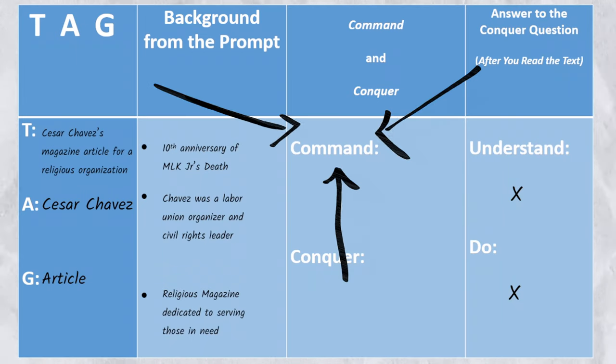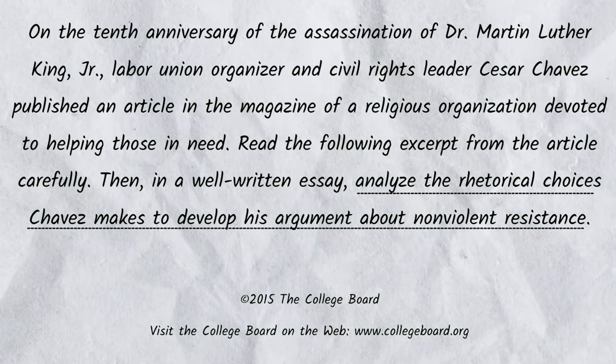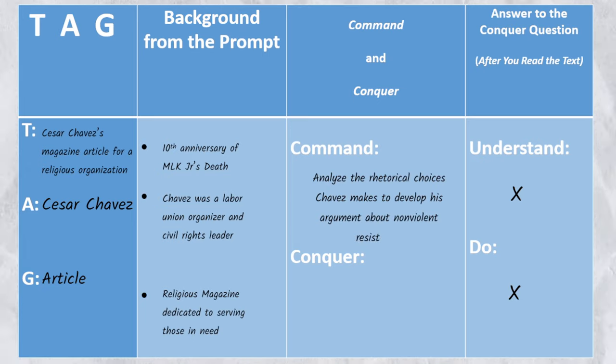Step three is identifying what I call the command element of the prompt. All we need to do is identify what we are actually commanded to do in the essay. We are commanded to analyze the rhetorical choices that Chavez makes to develop his argument about non-violent resistance. So we start with the word 'analyze' and end at the end of the sentence. Does the prompt ask us to identify? No. Summarize? No. Explain? No. We have to analyze, and that verb requires more than those other three. So to find the command, we copy what we were commanded to do: analyze the rhetorical choices that Chavez makes to develop his argument about non-violent resistance. By the way, if you've been watching my videos and haven't subscribed yet — click both the subscribe and like buttons and you'll have all the assistance you need to do well in your English class.